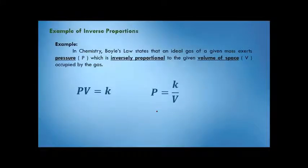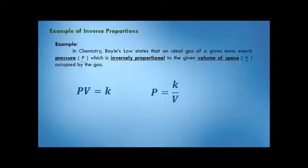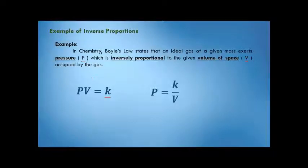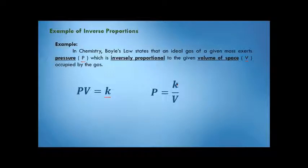An example of inverse proportion comes from chemistry: Boyle's Law states that an ideal gas of a given mass exerts pressure P which is inversely proportional to the volume V of space occupied by the gas. In the formula, the product of pressure and volume equals k, a constant. Deriving it gives P equals k over V — volume is in the denominator, their positions are opposite — confirming it is an inverse proportion.